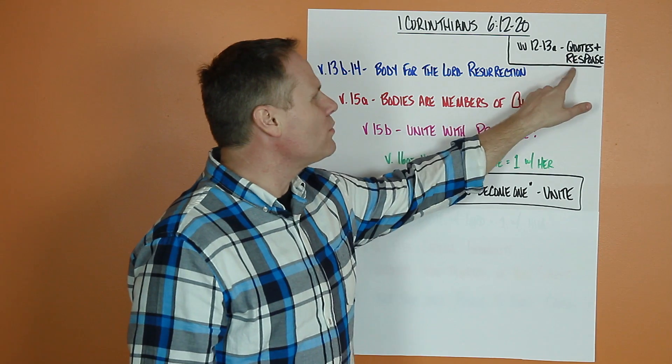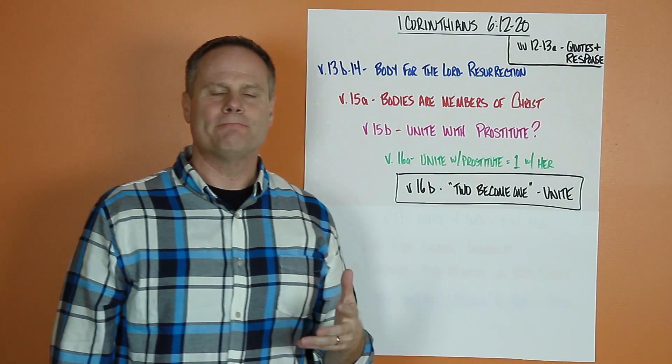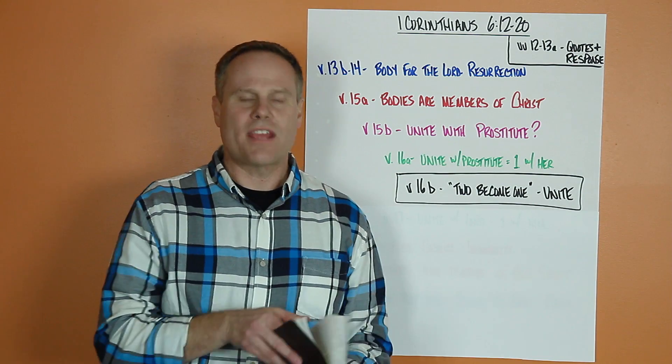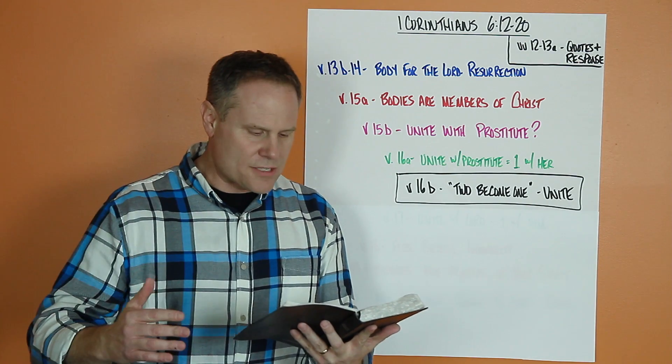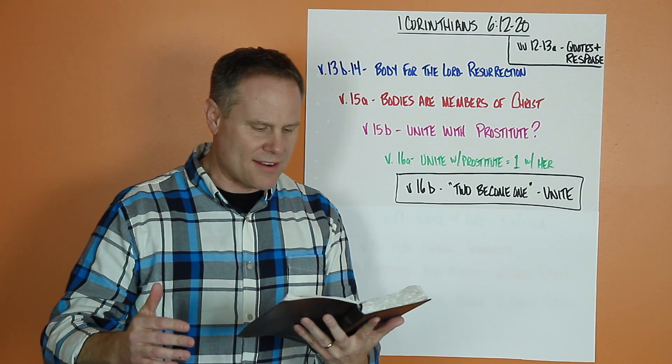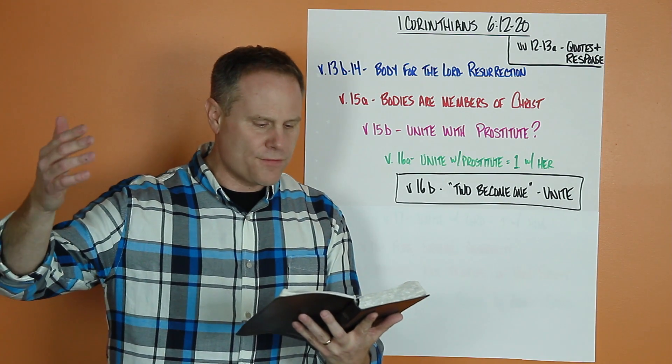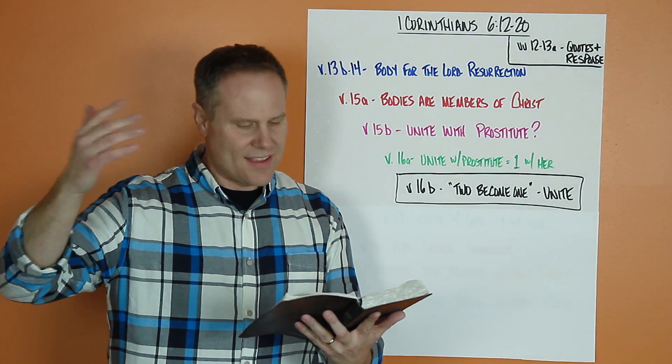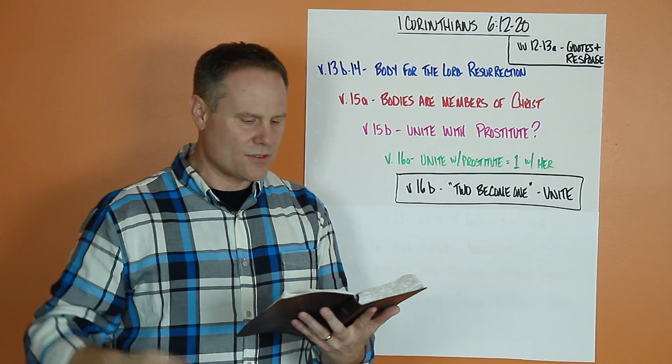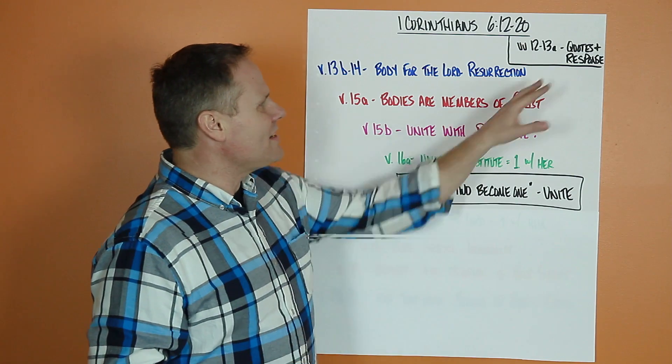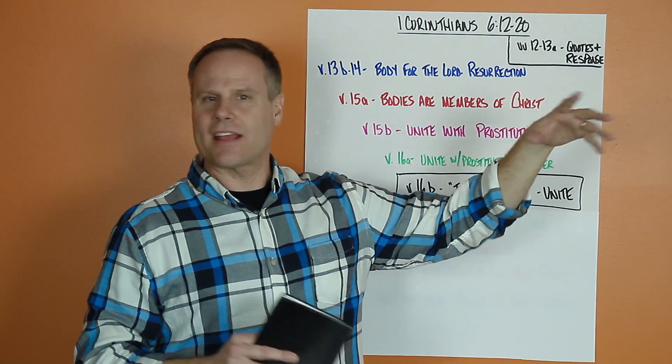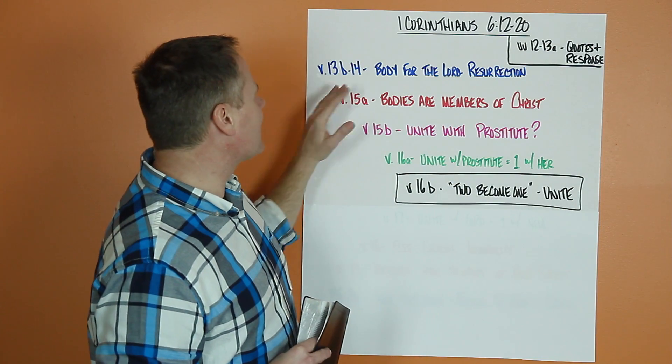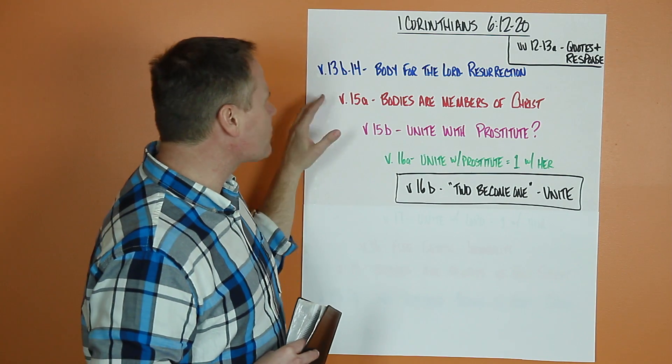It starts with those quotes and responses, a style of communication. So verse 12: I have the right to do anything, but not everything is beneficial. I have a right to do anything, but I won't be mastered by anything. Food for the stomach, stomach for food, and God will destroy them both. And then he says the body is not meant for sexual immorality, but for the Lord. So he starts with those quotes and responses about what's good for me. But then he gets into the chiastic structure.